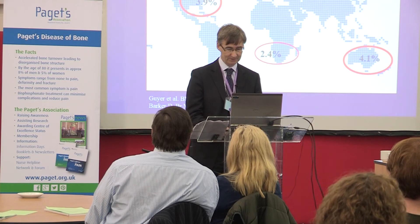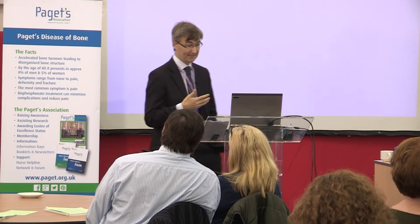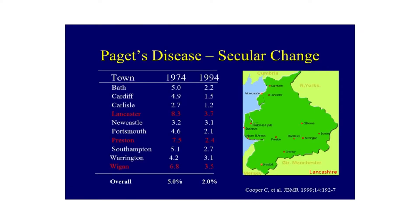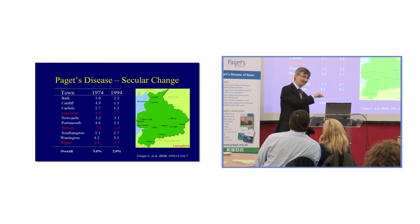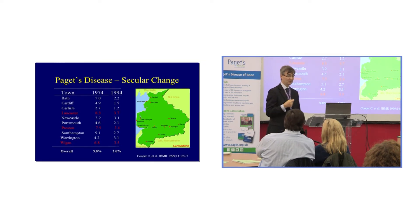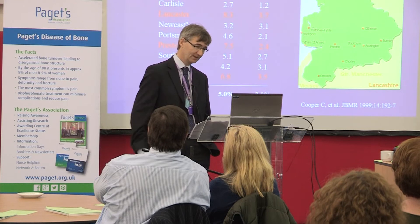One of the really fascinating findings is that the disease has been declining in frequency over the last 50 or more years. The best evidence derives from this country, where surveys looking at hospital X-rays were done in 1974 and again using the same centres, same radiologists and same methods in 1994. The key finding was that prevalence declined from 5% in 1974 to 2% — reduced to about 40% of what it was in the 1970s.